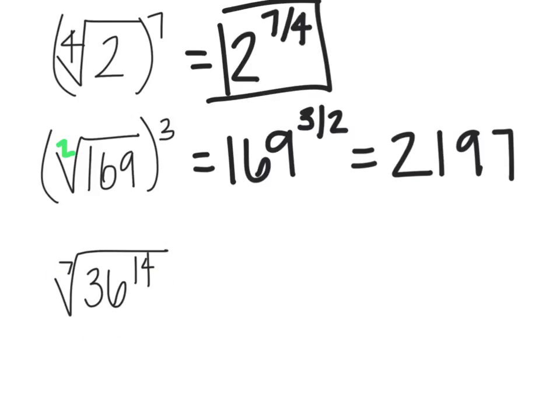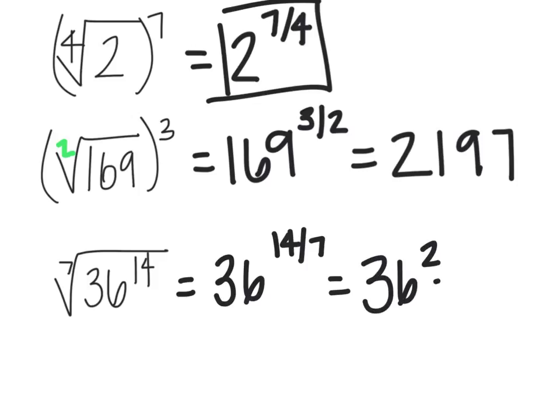The last one I have is the seventh root of 36 to the 14th power. It seems like it's going to be awful. So let's rewrite this. 36. The 14 is going to go on top. The 7 is going to go on bottom. Well, this one actually works out really nicely because 14 divided by 7 is really 2. So this becomes 36 to the second power. And 36 squared is actually 1296. So the answer to this problem would have been simplified to 1296.